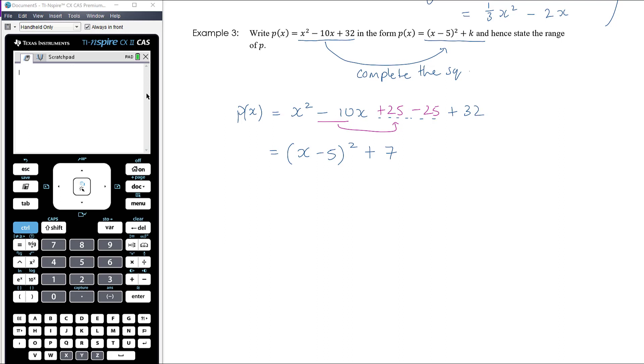So p is a quadratic; it's a happy parabola. If we drew it, it's a happy parabola, and we've now discovered by writing it in turning point form that it has a turning point with coordinates of (5,7). And so therefore we know that the range of p is going to be from 7, including 7, to infinity.